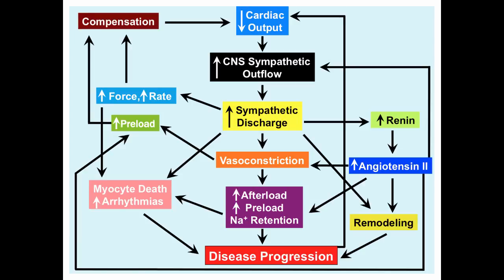However, over time, these compensatory mechanisms lead to a worsening of cardiac output and myocyte death. Thus, efforts to help these patients are focused on increasing contractility and stroke volume, decreasing preload, decreasing afterload, lowering blood volume and sodium retention, and stopping the cardiac remodeling process. Preload is a diastolic filling pressure and is a function of blood volume and venous tone, whereas afterload is determined by arterial blood pressure and large artery stiffness.